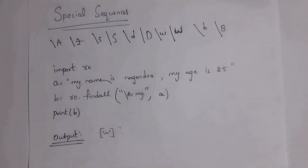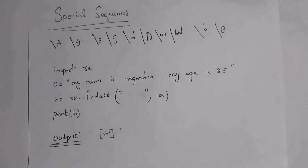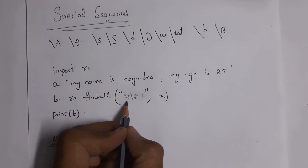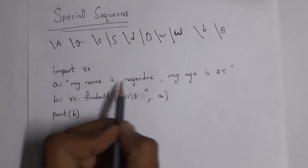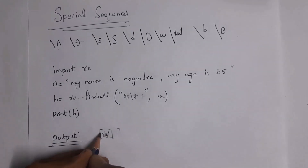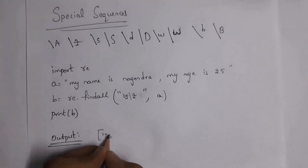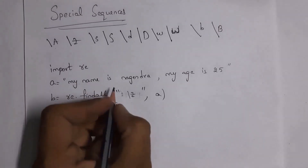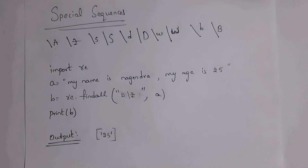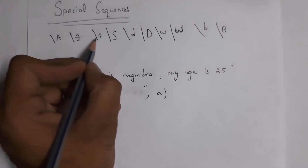Next I'll explain `\Z`. While `\A` identifies whether characters are available at the start, `\Z` is used to identify whether characters are available at the end. For example, `re.findall('25\Z', a)` checks whether '25' is at the end of the string. Since '25' is the last two characters, the output is `['25']`. If I write 'is', it is not at the end, so the output is an empty list.